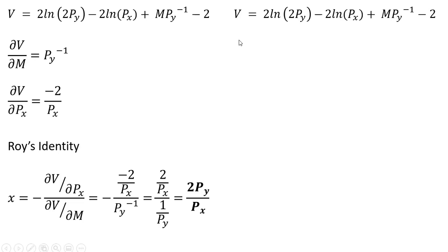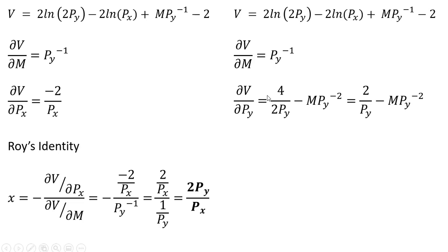Now let's do a similar thing to get the demand for good y from the indirect utility function. Taking the partial derivative of the indirect utility function with respect to income, we get this result. Taking the partial derivative with respect to the price of good y, we get this result, which simplifies down to the following.